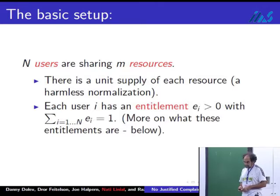There is another ingredient of the model which is entitlements, which is a little less obvious to understand. For the moment, these are just positive numbers. Associated with each user is one positive number called their entitlement, e_i. It's positive, and the sum of the e_i's is one.